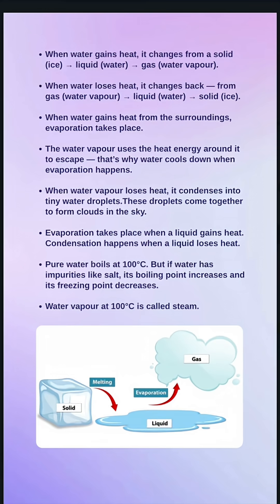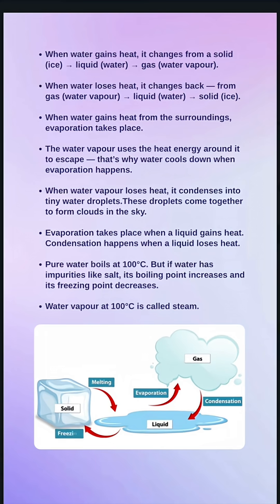When water vapor loses heat, it condenses into tiny water droplets. These droplets come together to form clouds in the sky. Evaporation takes place when a liquid gains heat; condensation happens when a liquid loses heat.